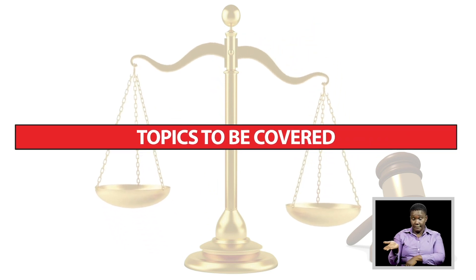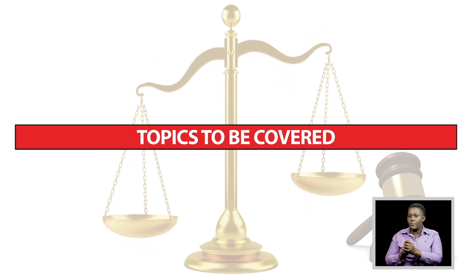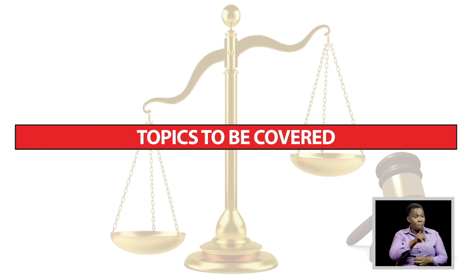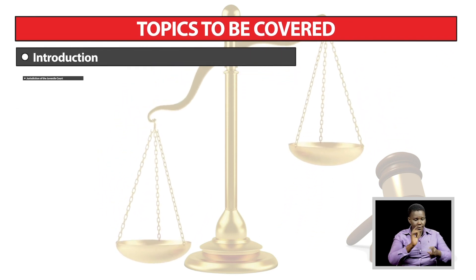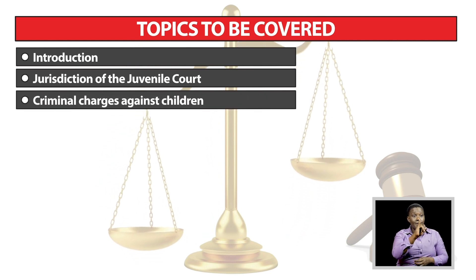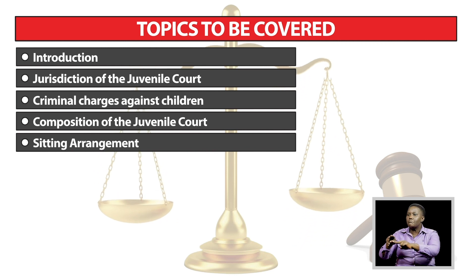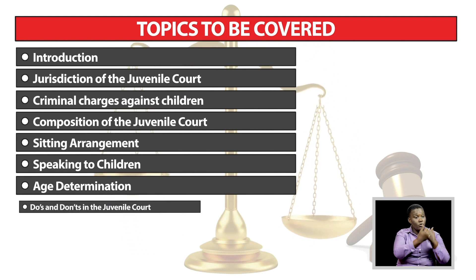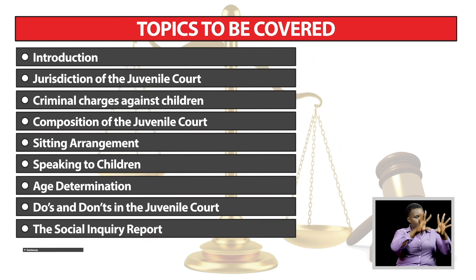This teaching tool covers different topics on criminal charges against children in conflict with the law, as well as civil applications and child protection cases involving children. In the criminal charges, the following topics will be covered: introduction, jurisdiction of the juvenile court, criminal charges against children, composition of the juvenile court, sitting arrangement, speaking to children, age determination, do's and don'ts in the juvenile court, the social inquiry report, and sentences.